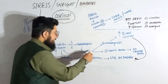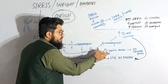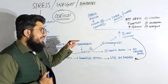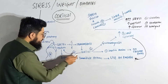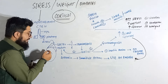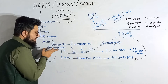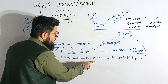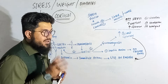Cortisol has two paths. The first path is toward gluconeogenesis plus inhibition of insulin action — meaning insulin's action is inhibited. The second path is toward the medulla. As cortisol diffuses from the cortex into the medulla, it causes stimulation — specifically, the release of adrenaline.